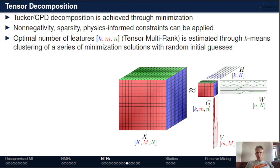In our Smart Tensors application, Tucker and CP decomposition are achieved through minimization, and we can apply constraints in the process. The optimal number of features is estimated through k-means clustering of a series of minimization solutions with random initial guesses. We solve the problem multiple times, store the results, and use k-means clustering to identify the optimal number of features in every single dimension. This is computationally intensive, but I'll show examples from recently solved problems.